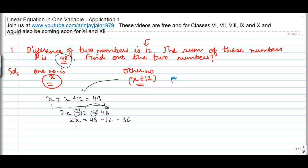So if 2 times x is equal to 36, then what is the value of x? Now this is a multiplication sign, so if it moves to the other side it should become division. So 36 divided by 2 will give me 18. So if x is equal to 18, the other number is x plus 12, which will be 18 plus 12 is equal to 30.